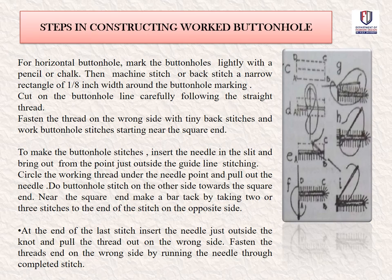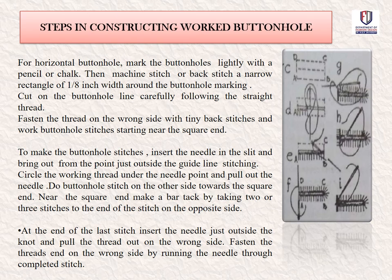Do buttonhole stitches on the other side towards the square end. Near the square end, make a bar tack by taking 2 or 3 stitches to end the stitch on the opposite side. At the end of the last stitch, insert the needle just outside the knot and pull the thread out on the wrong side. Fasten the thread end on the wrong side by running the needle through and complete the stitch. The bar tack is completed and a knot is done on the wrong side for a proper finish.